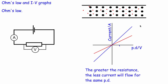We saw in the last video that the potential difference V and the current in the circuit or going through a component I are proportional to each other. So if you increase the potential difference then you increase the current, and the constant of proportionality was the resistance. So the potential difference is equal to the current multiplied by the resistance.